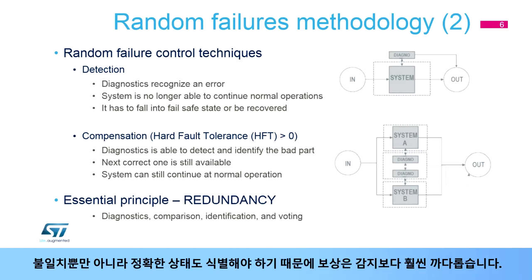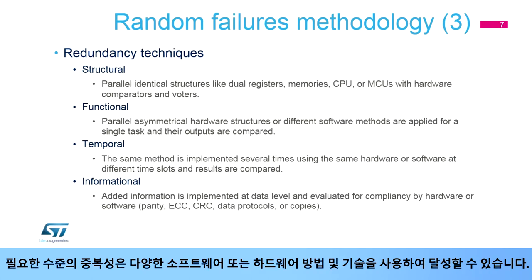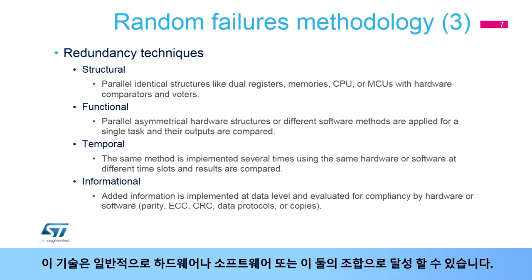Compensation is considerably more demanding than detection, as not only discrepancies but the correct state has to be identified as well. To do so, specific comparison and voting mechanisms have to be additionally applied. The required level of redundancy can be achieved using a wide range of different software or hardware methods and techniques. Some of them are listed here, and others will be highlighted later in this presentation.